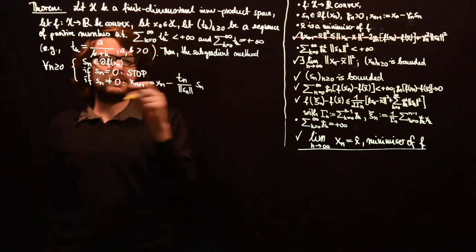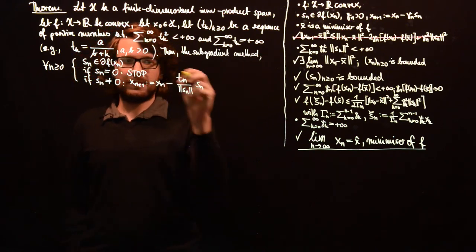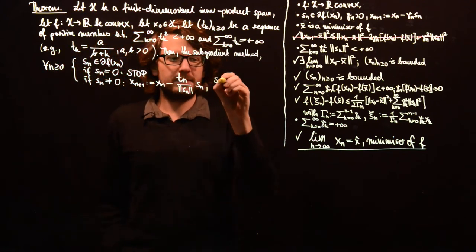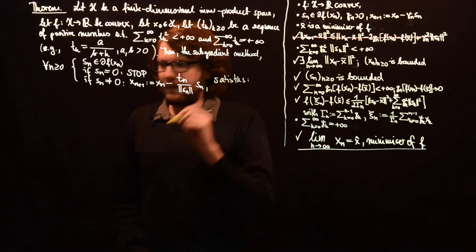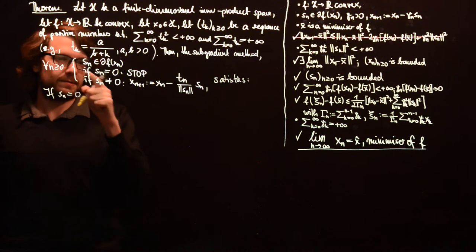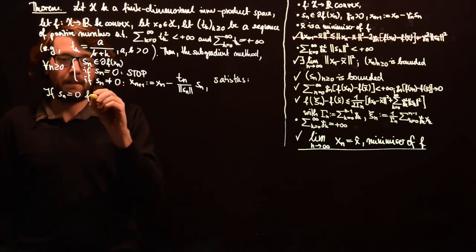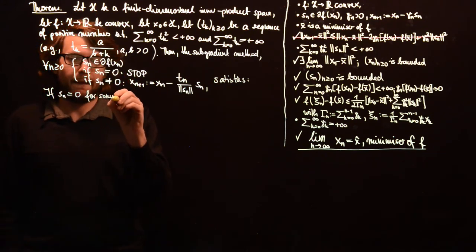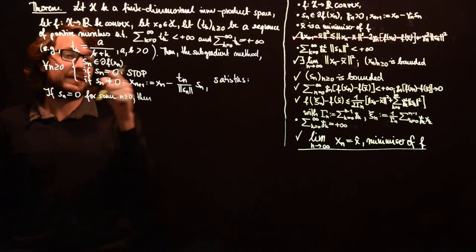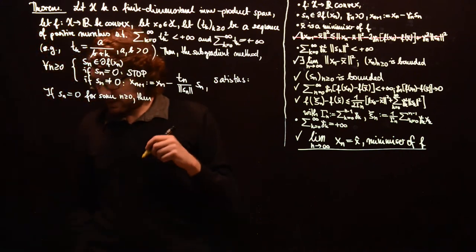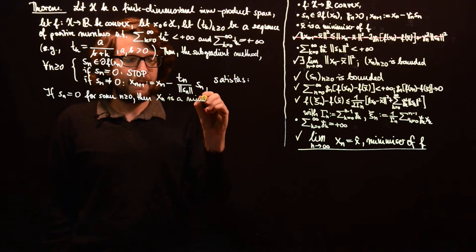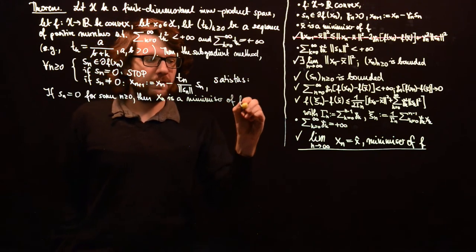Then the subgradient method, this iteration satisfies the following things. If s_n equals 0 for some n, then x_n is a minimizer of f.